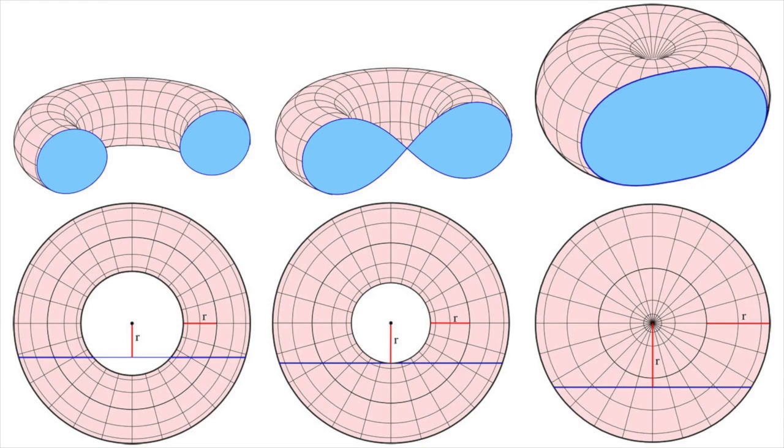So, imagine cutting a doughnut into very thin slices with a sharp knife, always keeping the blade exactly upright and ensuring that each cut is parallel with the one before, and you'll get the picture.